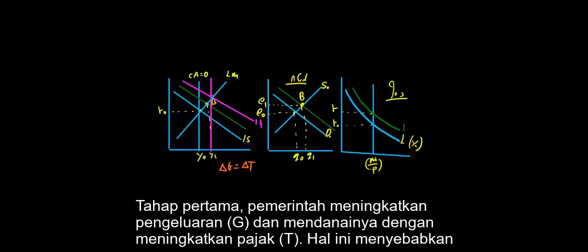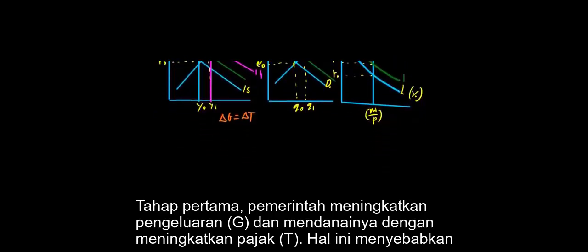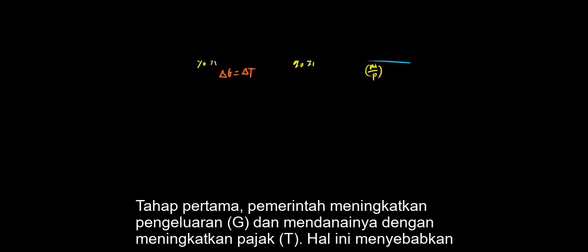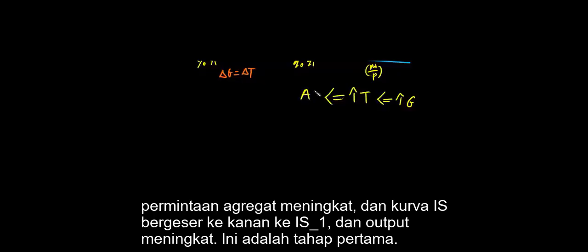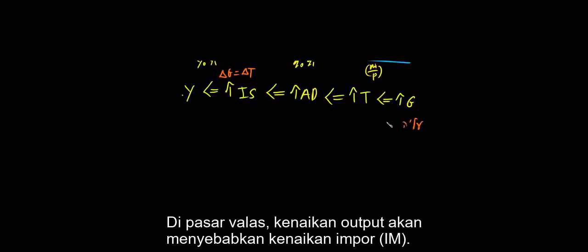We will now see this diagram using letters. We have this situation: the first stage, the government increases G. By increasing T, this causes aggregate demand to change, the curve shifts to the right, and output increases. This is the first stage. In the foreign exchange market, an increase in output will lead to an increase in the demand for foreign currency.